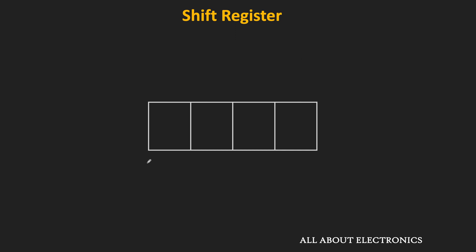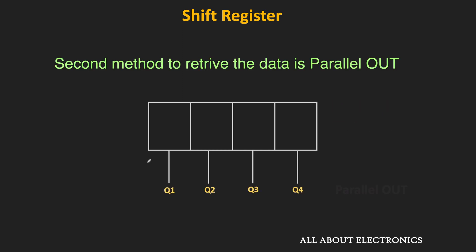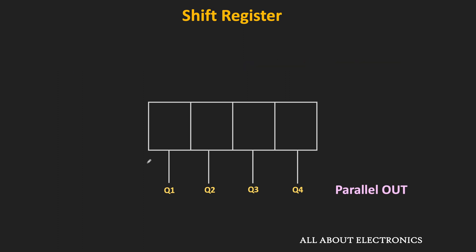Similarly, there are two ways to retrieve the data from the shift register. The first is the serial out — in serial out, we have only one output line, and at every clock, we can access only one output bit. So in a 4-bit shift register, to retrieve the data, we will require 4 clock signals. The second method is the parallel out, where we can access all the output bits in a single clock. So if we have a 4-bit shift register, all 4 outputs of the shift register should be accessible.